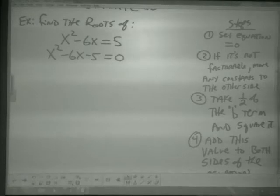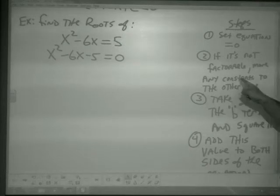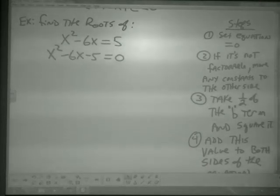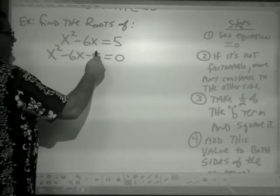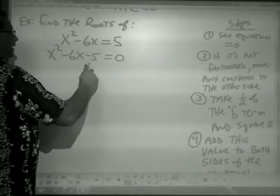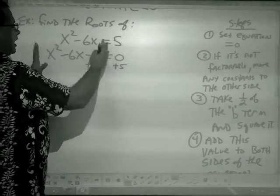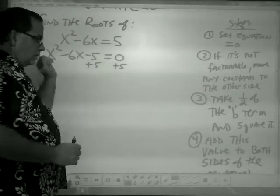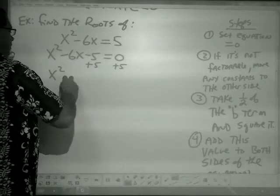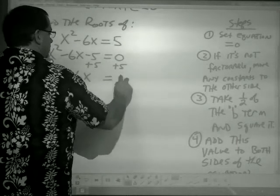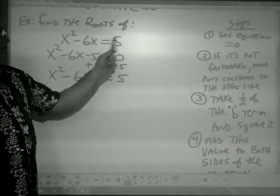If it's not factorable, move any constants — the c term — to the other side. You first get everything equal to zero to see if it's factorable, and if not, kick the constant back to the other side. So we have x² - 6x = 5.